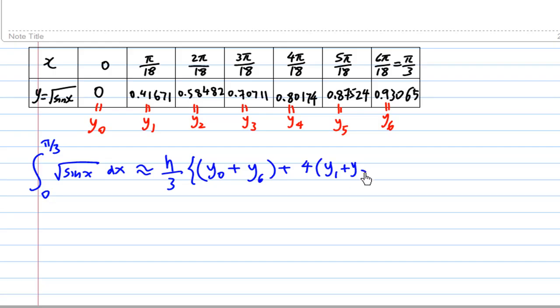Then 4 times all the odd position y, which is y1, y3, and y5, then plus 2 times all the even position y, which is y2 plus y4. Notice that y6 has been included in the first term.